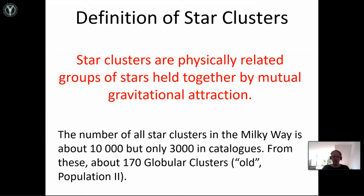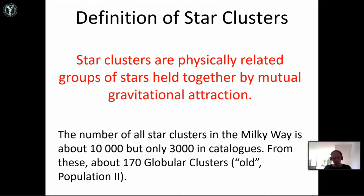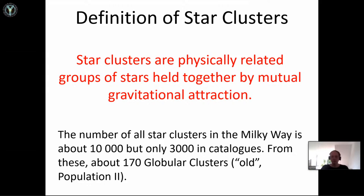The definition of star clusters is quite easy: star clusters are physically related groups of stars held together by mutual gravitational attraction. With GAIA, this picture has changed a little bit because we found a lot of moving groups. Now there are questions like: what is the lowest number of stars forming a star cluster — is it 10, 100, 1,000, or 10,000? This is also what we hope to answer with GAIA.